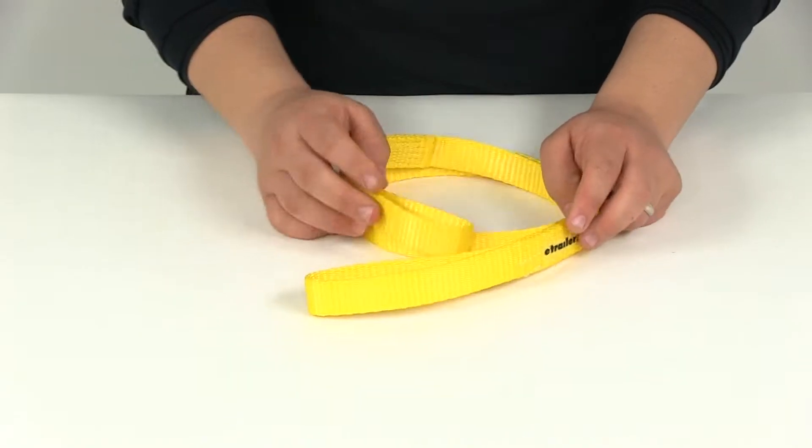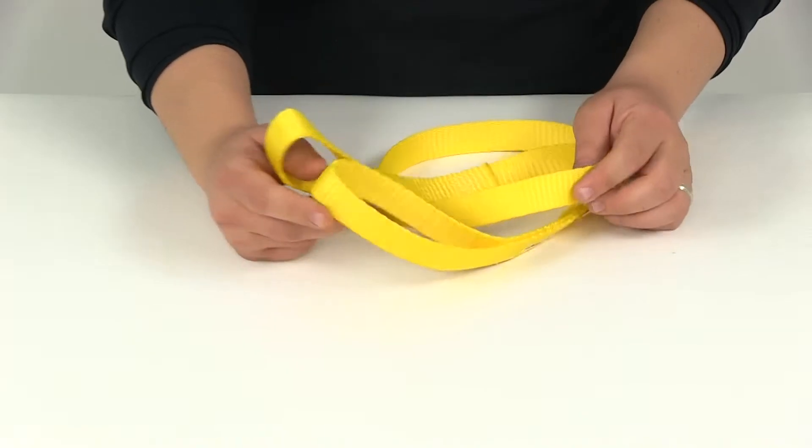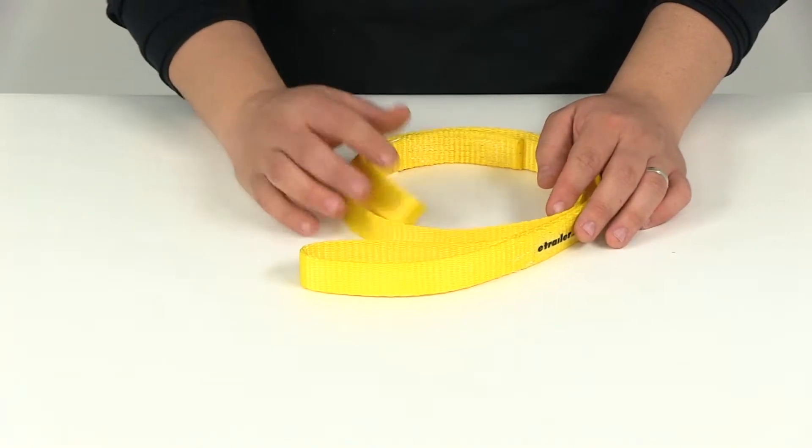You can do the basket style, which is where you wrap this around numerous times. Put the ends together, place the hook through, and then lift it. That's going to give you a safe working load limit of about 2,400 pounds.